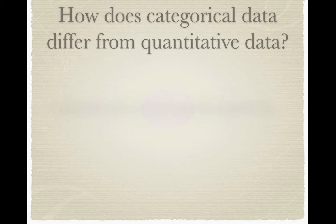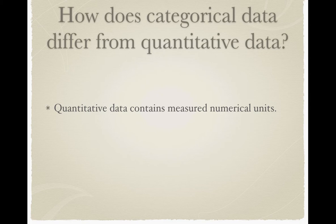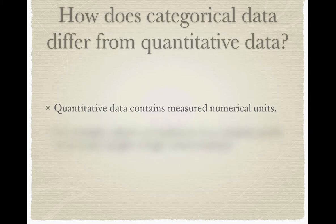Quantitative data — the biggest difference is it contains measured numerical units. For example, you might see quantitative data where people are asked their salary, their grade on an exam, their height — values that can actually be measured for each individual person, not just lumped into a category with a group of people.